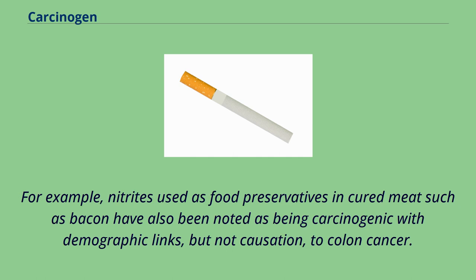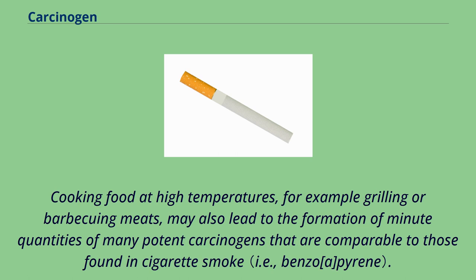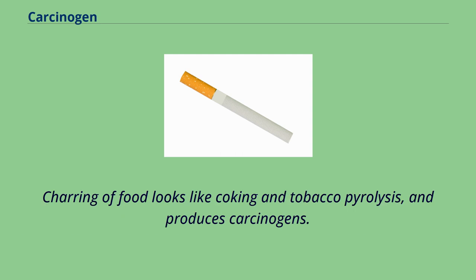For example, nitrites used as food preservatives in cured meat such as bacon have been noted as being carcinogenic, with demographic links — but not causation — to colon cancer. Cooking food at high temperatures, for example grilling or barbecuing meats, may also lead to the formation of minute quantities of many potent carcinogens that are comparable to those found in cigarette smoke. Charring of food resembles coking and tobacco pyrolysis, and produces carcinogens.